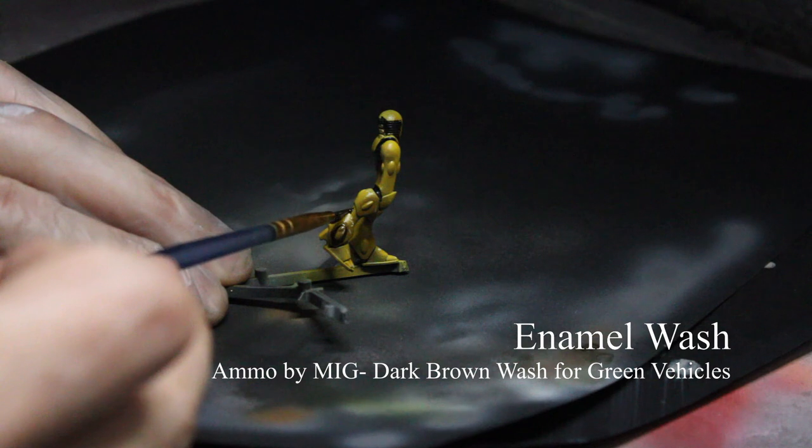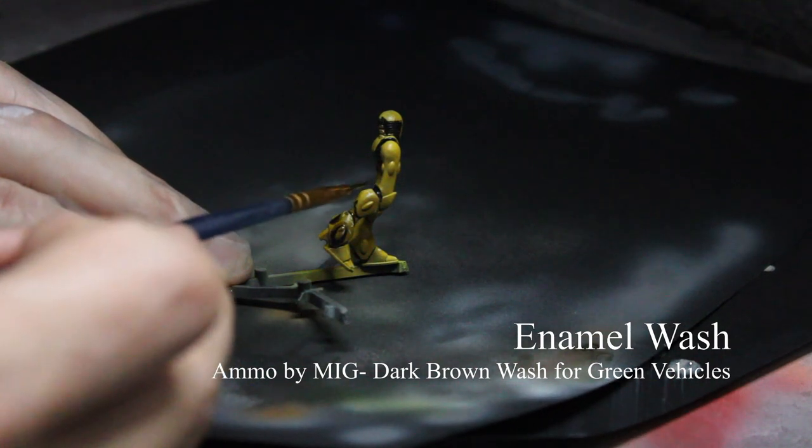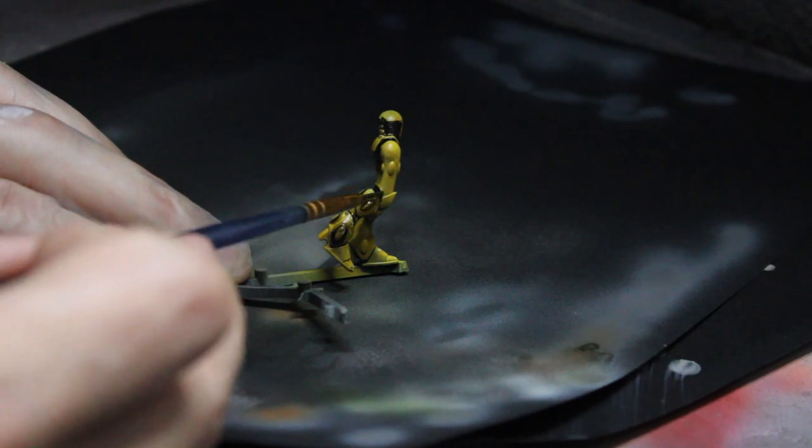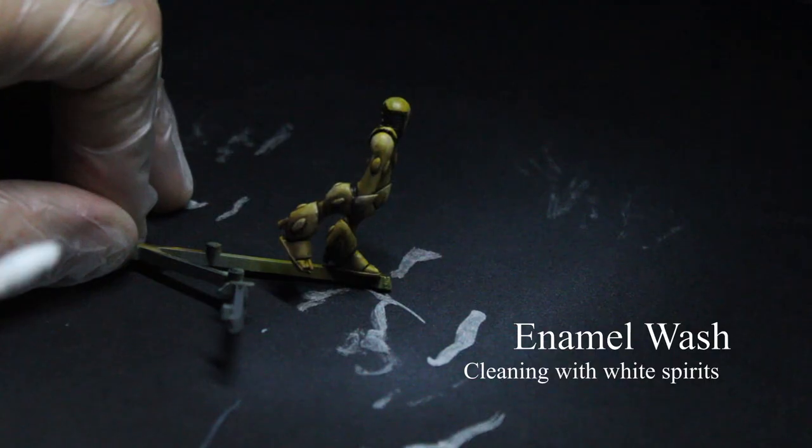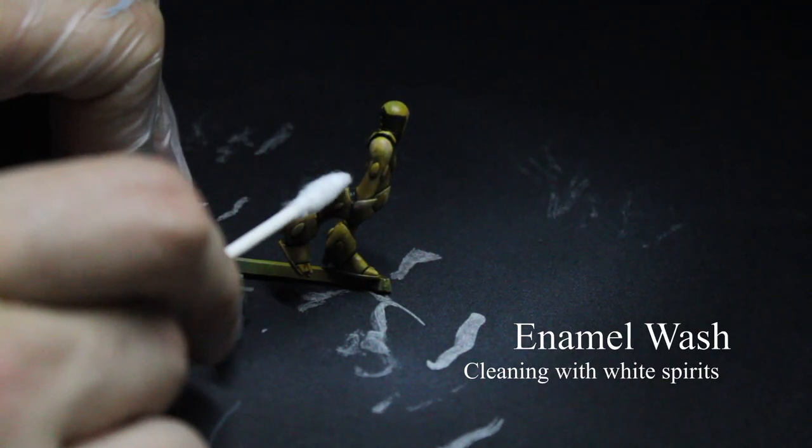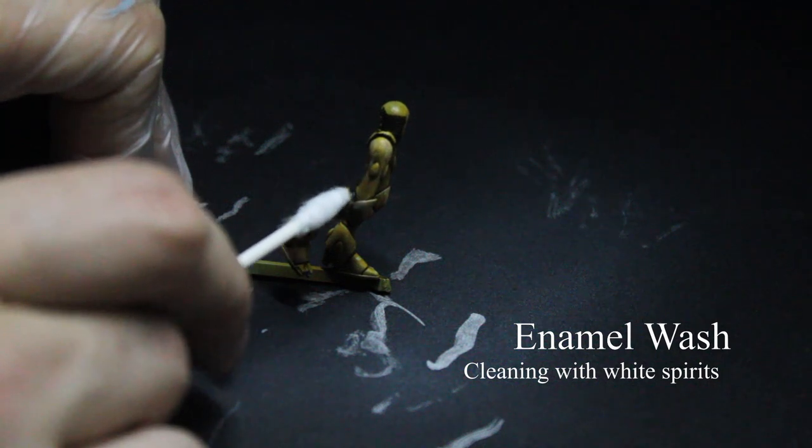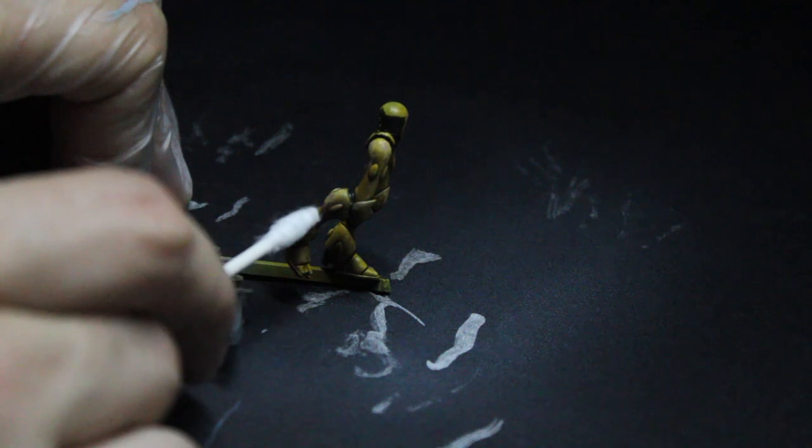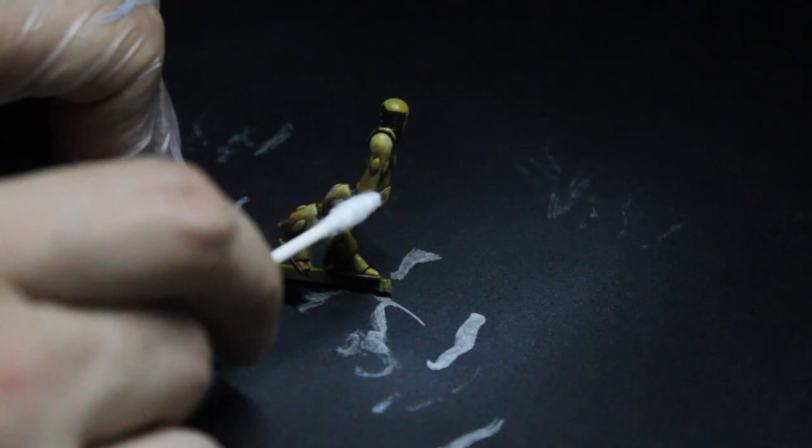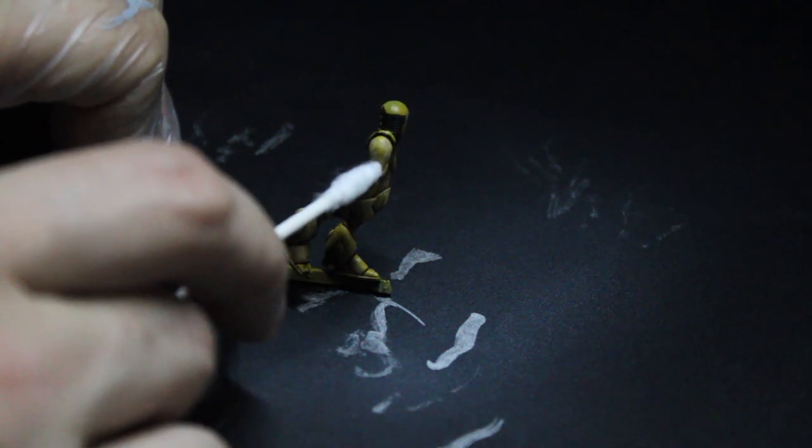Selectively pin wash the recesses. Allow to dry for 10 to 15 minutes or with a hair dryer. Then remove the excess paint with a cotton swab soaked with mineral spirits. Do this over the entirety of the model, not just the yellow armor as shown here.